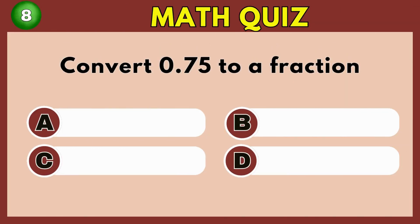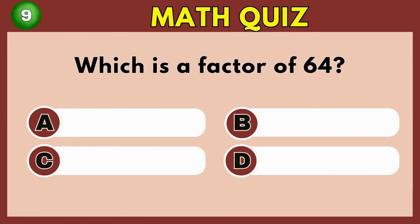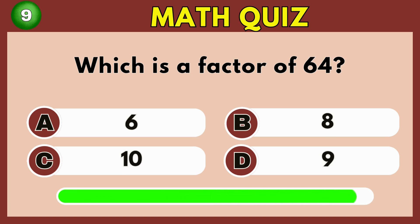What is 0.75 as a fraction? Option D. 3 fourths. Which of these is a factor of 64? Option B. 8.